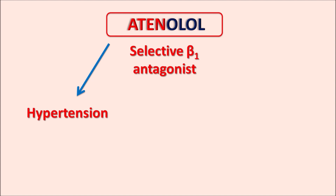Sometimes this drug can be combined with diuretics in order to increase the efficacy of treatment, as diuretics reduce body fluid volume, thereby reducing blood pressure. Similarly, atenolol can also be used to control angina. Angina is a pain in the heart which indicates reduced coronary oxygen supply and increased demand. In such situations, atenolol can reduce cardiac work, thereby reducing cardiac oxygen demand and improving the symptoms of angina.